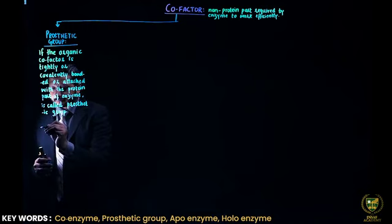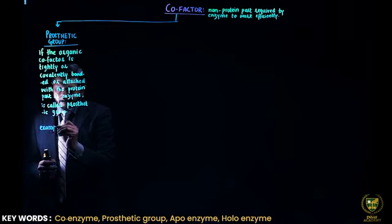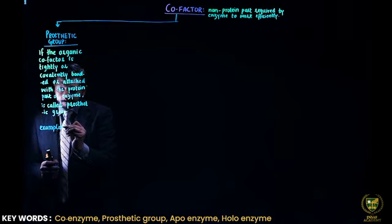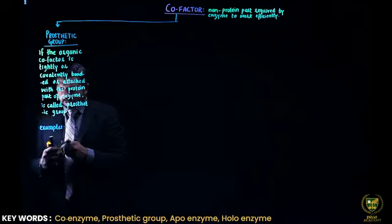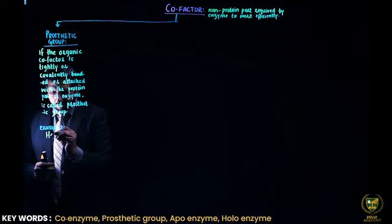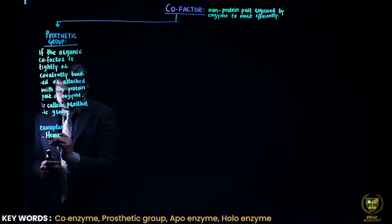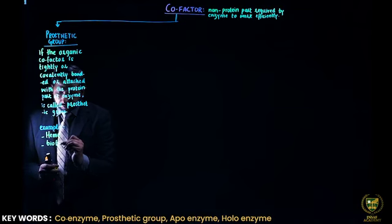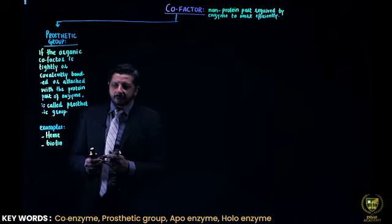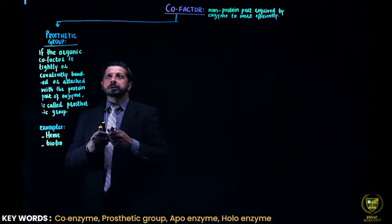Examples of prosthetic groups include heme and biotin. These are some examples of prosthetic groups.